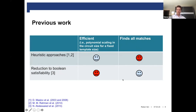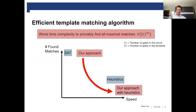In a work where they reduce the matching problem to the Boolean satisfiability problem, this approach actually allows to provably find all the matches. But the problem is that this approach is inefficient in the circuit size in the worst case. Our result is a new template matching algorithm that has a worst case time complexity which is polynomial in the circuit size — the number of gates in the circuit and the number of gates in the template. In general, the worst case complexity is still a polynomial of high degree if we have a lot of gates in the template.